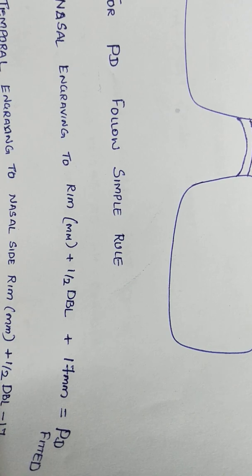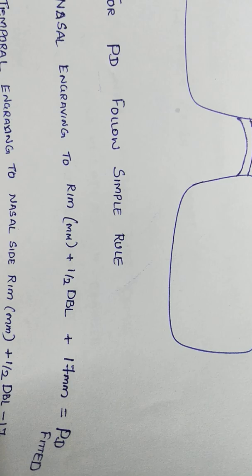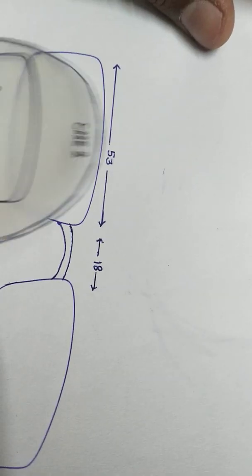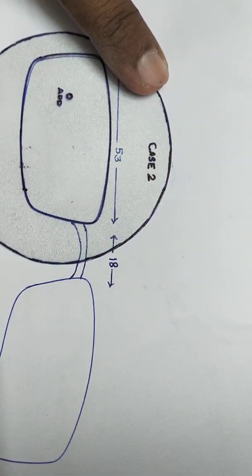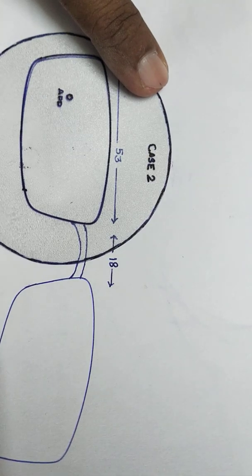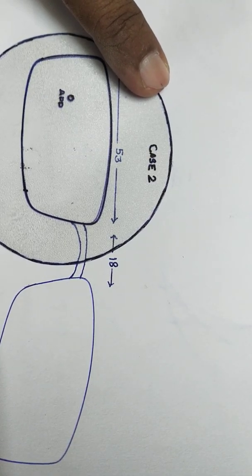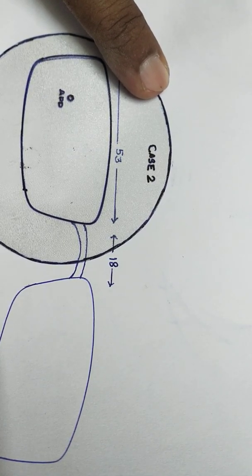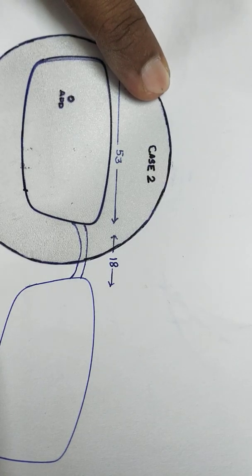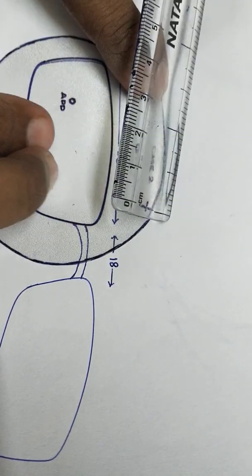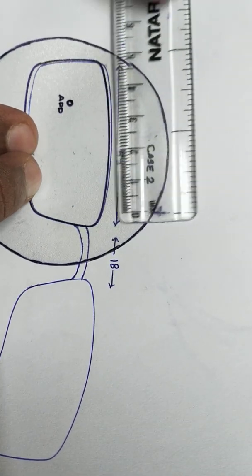Now let us consider case 2. I am just putting the same lens. Say for example a customer has come to me and I am able to see the temporal engraving. I can see the add there, maybe the nasal engraving is either cut or because of scratches it is not visible. Again, a very simple rule - just hold the scale, measure the deepest part.